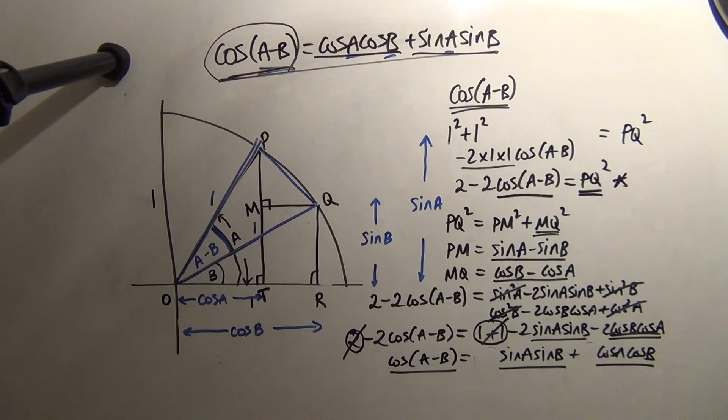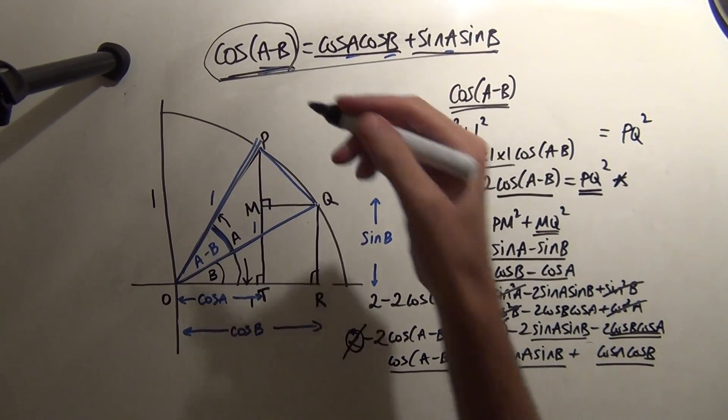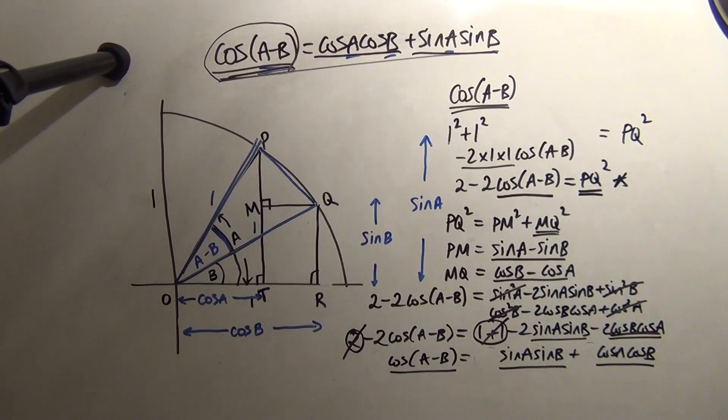So, once you've looked at that, you can now start looking at cos of A plus B. We can then get to sine of A plus B, and then sine of A minus B. And then from that, you can do tan of A plus B. And then from those, you can do sin2A is 2sinAsinB. And cos2A is 2cos²A - 1, or 1 - 2sin²A, or cos²A - sin²A.